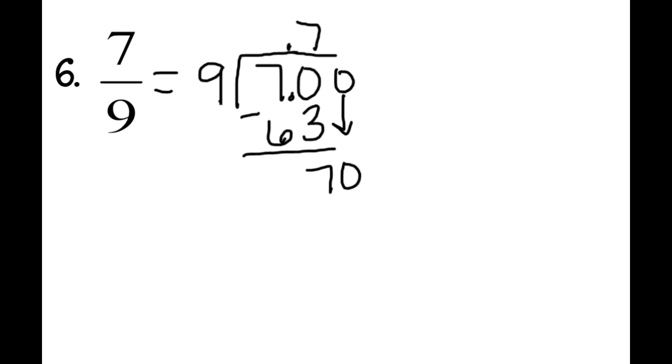Can 9 go into 70? Yes, we know. We just did it. It goes in 7 times. 7 times 9 is 63. 70 minus 63 is 7. We bring down a 0. At this point, we're starting to see a pattern, aren't we?